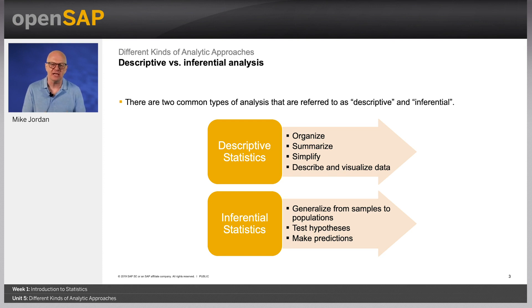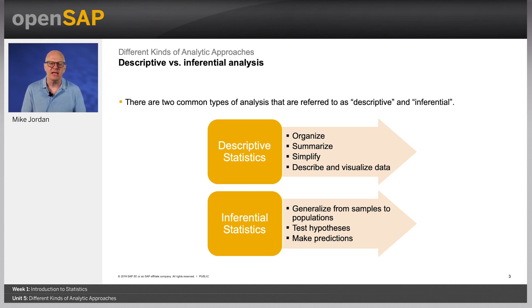Inferential analysis uses statistical techniques to analyse whether a pattern in the data is due to chance or due to the intervention that is being observed, and what the strength of that relationship is. The first step is to understand the data distribution — is it normal or non-normal? If the data are normally distributed, you will generally choose from a range of parametric tests. However, if the data are non-normally distributed, you will choose from the set of non-parametric tests.